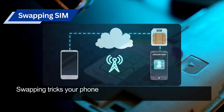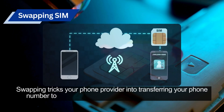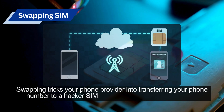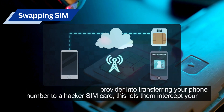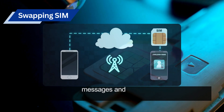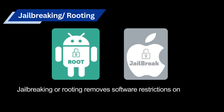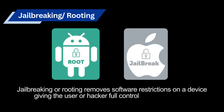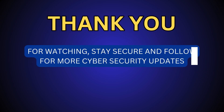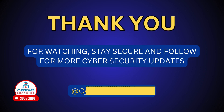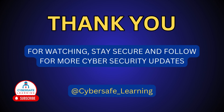SIM swapping tricks your phone provider into transferring your phone number to a hacker's SIM card, letting them intercept your messages and calls. Jailbreaking or rooting removes software restrictions on a device, giving the user or hacker full control over the system.